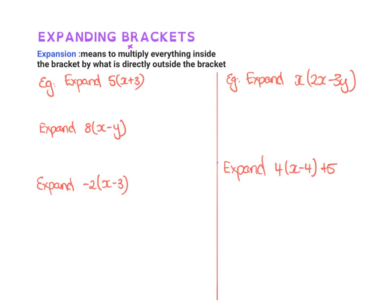So first of all, if we have a look here, they're asking us to expand. So expand means when you get rid of the brackets. When you have a 5 outside, it means that you actually got to times that x by 5 and also that 3 by 5.